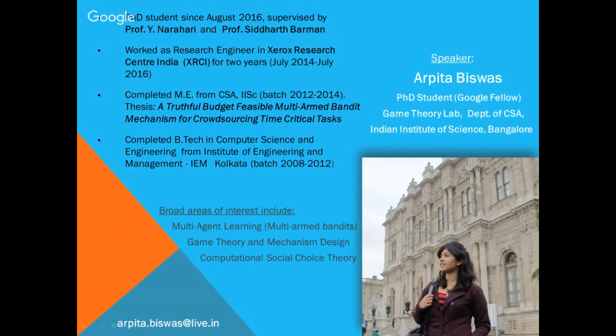Just to give a brief intro about myself, I am a Google PhD fellow at the Computer Science and Automation Department at the Indian Institute of Science. My PhD advisors are Professor Vai Narahari and Professor Siddharth Barman. I worked as a Research Engineer in India for two years, completed my master's from Computer Science, IISc, and B.Tech from Institute of Engineering and Management. My broad areas of interest include multi-agent learning systems, game theory and mechanism design, and computational social choice theory.